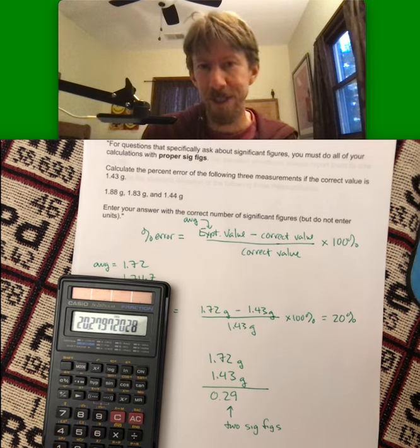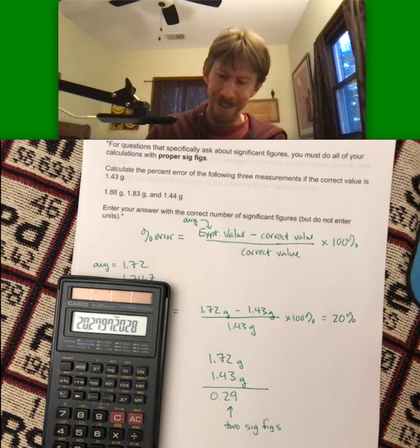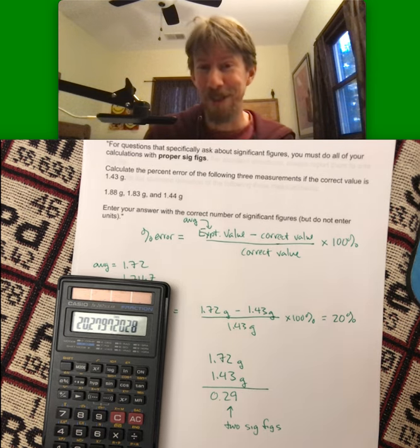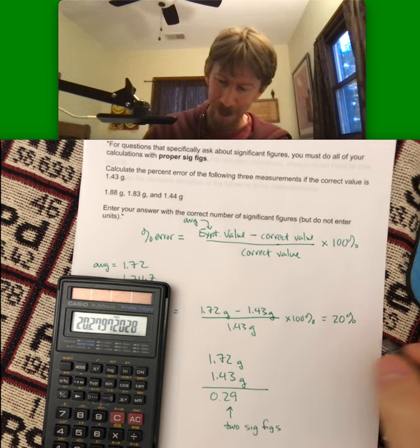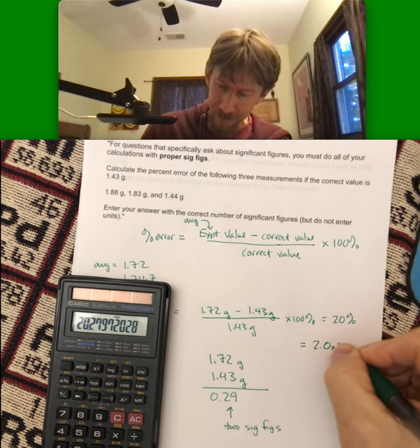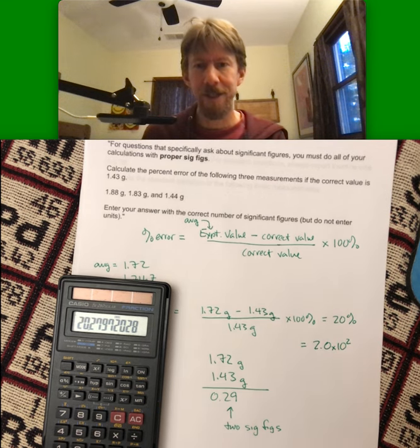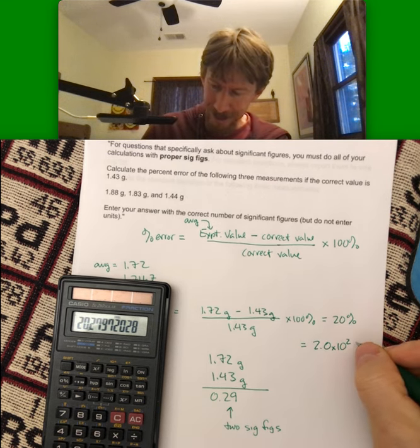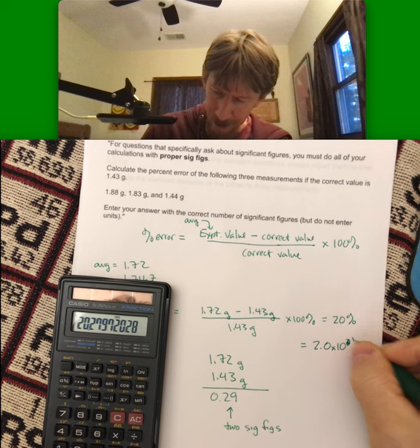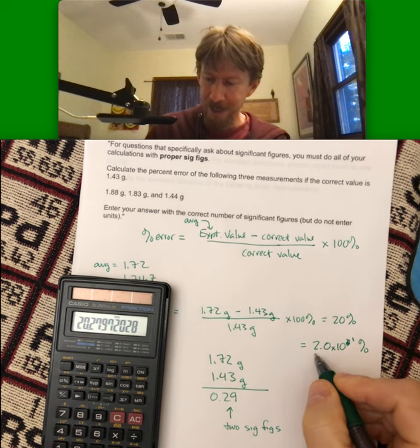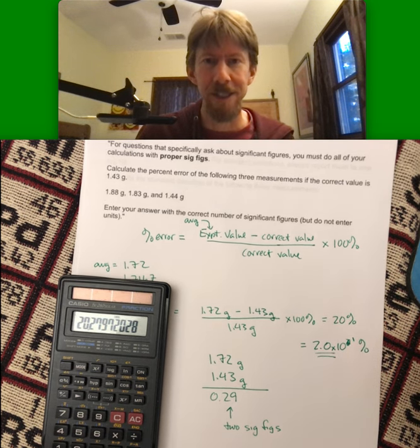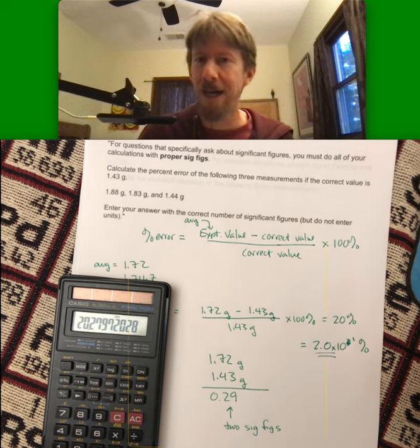Which is ambiguous and you should not see any ambiguous numbers on your homework by the way but the proper way to do this would be to enter it as 2.0 times 10 to the 1 percent because that lets me know that both of those digits are significant.